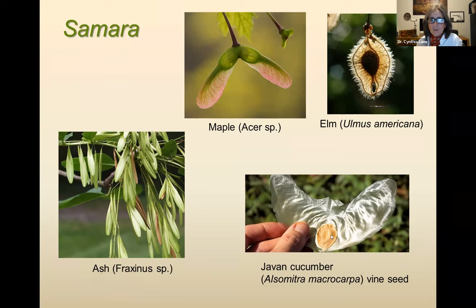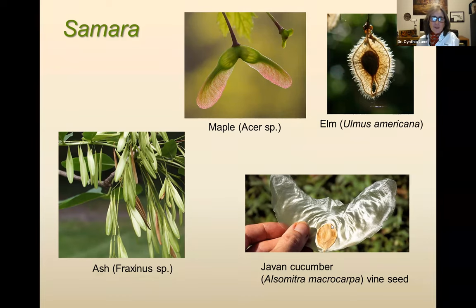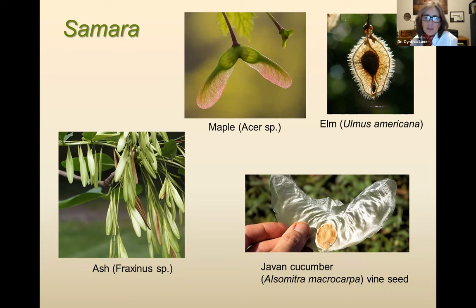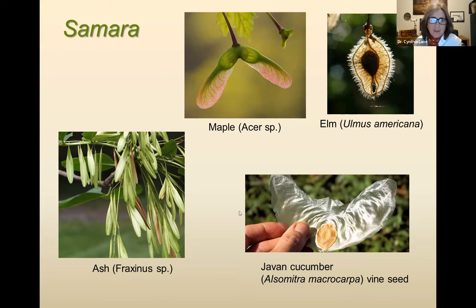The Java cucumber is also a samara — they're huge, and it's a neat example of how completely unrelated plants can develop the same kind of structure for dispersal. This is a huge vine with a big gourd-like fruit, and then these samaras just drop out of it.